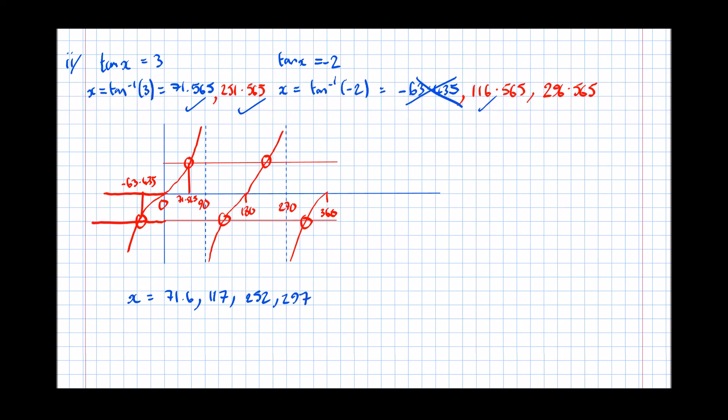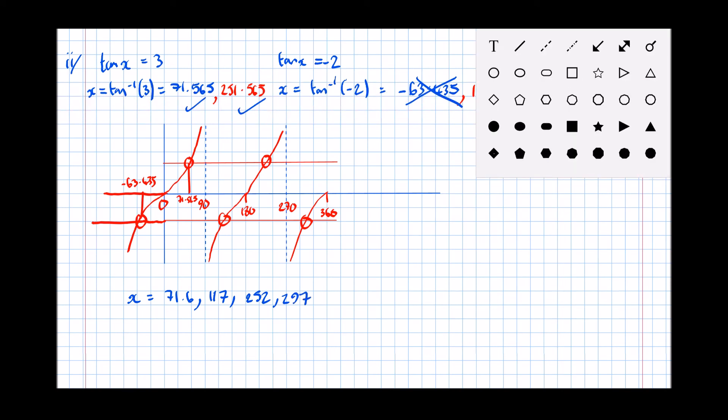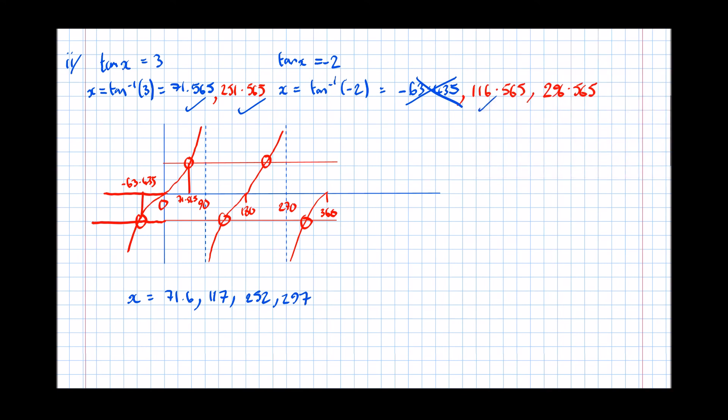And then there's 297 degrees. And making our answer prominent, put a box around it or underline it. There we go. And we're done. There's all the valid answers.